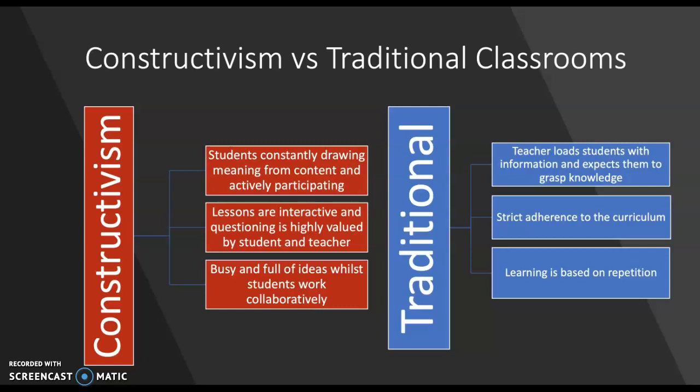When traditional classrooms and constructivist classrooms are compared, there are some major differences. In a traditional classroom, teaching is done by loading students with information and then expecting them to grasp the knowledge while working hard to memorise it. Strict adherence to the curriculum is highly valued, learning is based on repetition, students engage in passive learning as the teacher regurgitates information, students work alone in a competitive environment, and the teacher's role is often authoritarian.